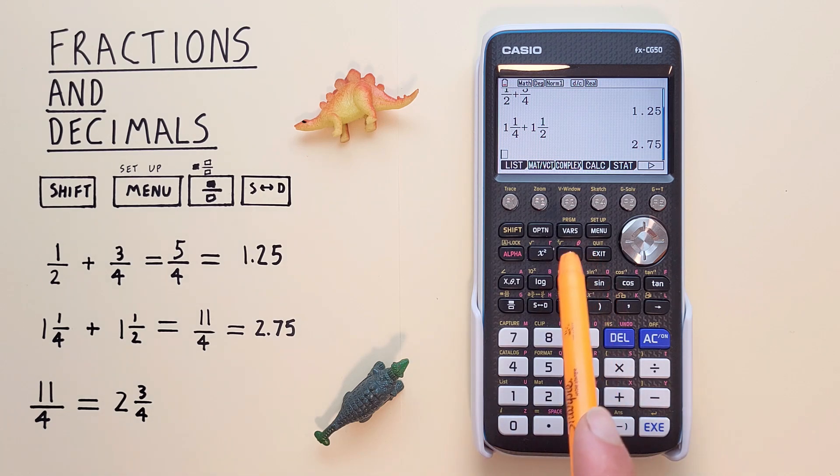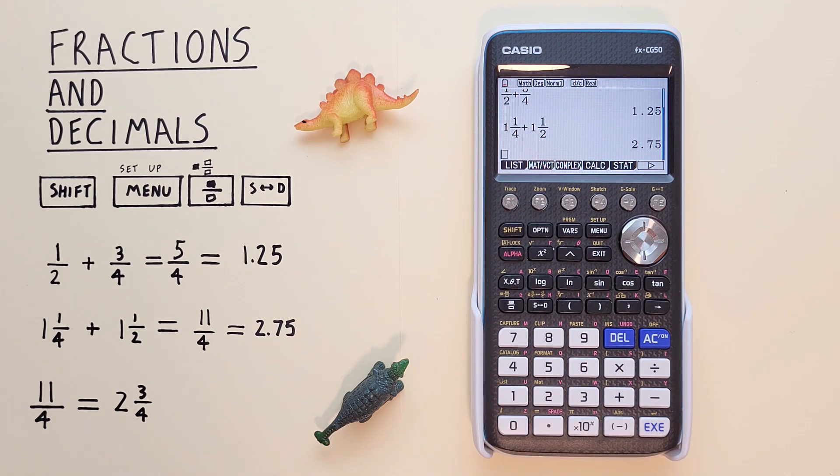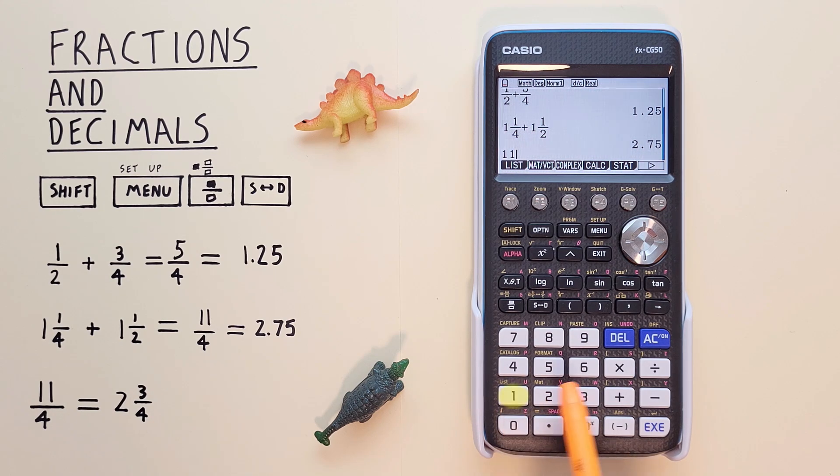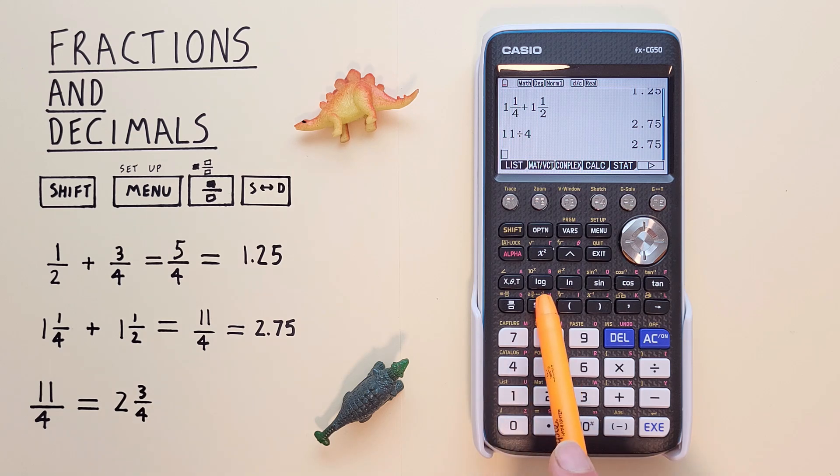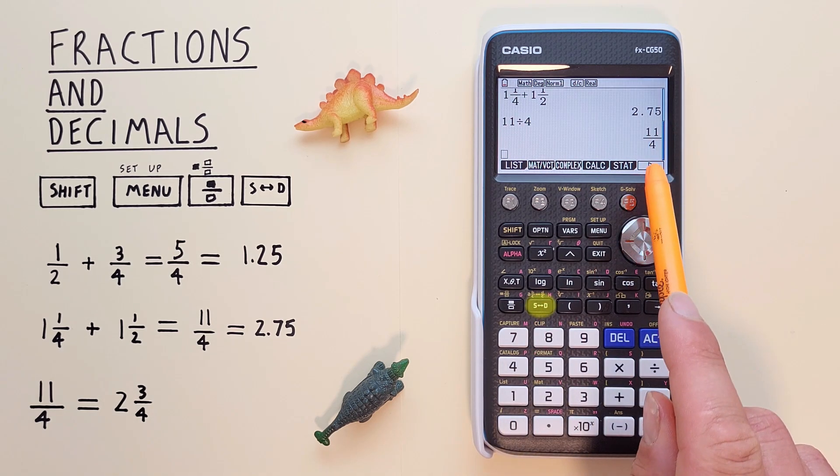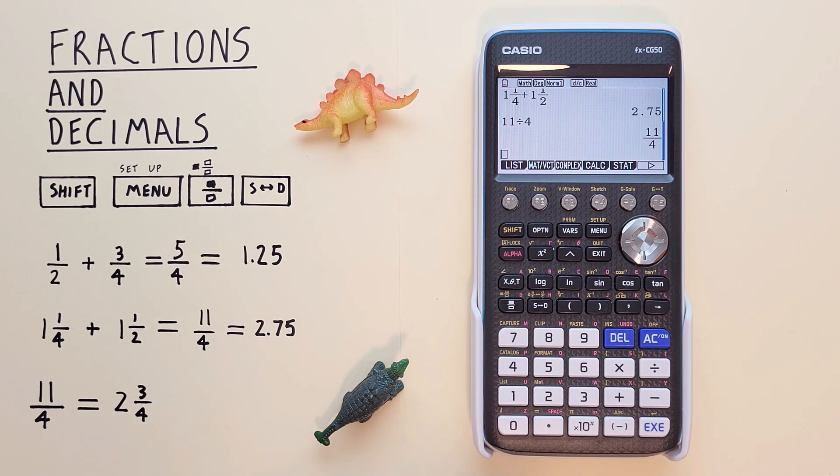As we've seen, this calculator defaults to an improper fraction when converting. So if we have 11 divided by 4, we get 2.75 and it converts to 11 over 4. But what if we want that to default to our mixed number fraction?